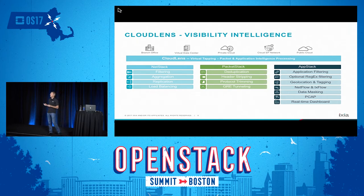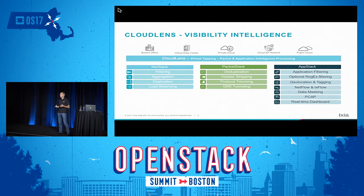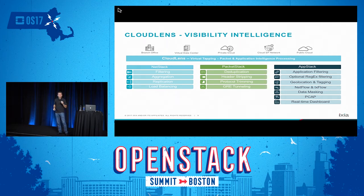Going a little deeper, the solution has three families of features: the NetStack, the PacketStack, and the AppStack. On the NetStack side, that's where we do the virtual tapping. We do level 2 to level 4 filtering at the source, very close in the compute node, in the hypervisor. We do aggregation and send those packets via GRE tunnel or VLAN to a packet processing feature — physical or virtual. The PacketStack is where we do packet processing: deduplication, header stripping, packet trimming, protocol trimming, GRE tunnel, and load balancing.